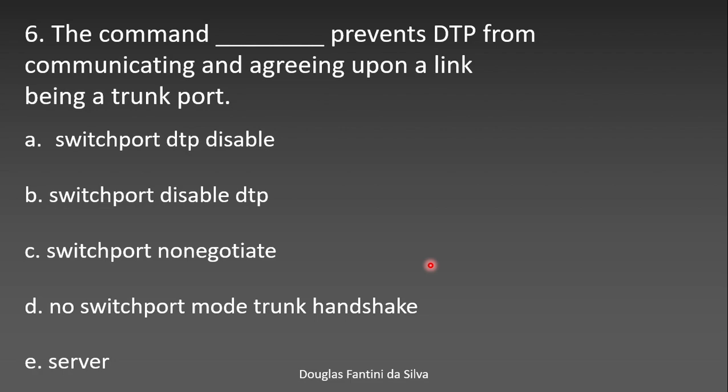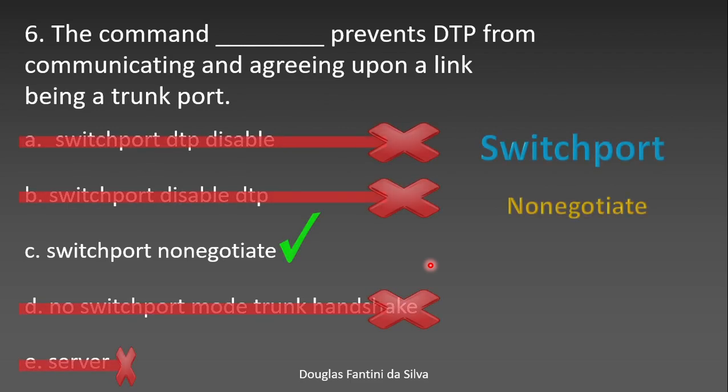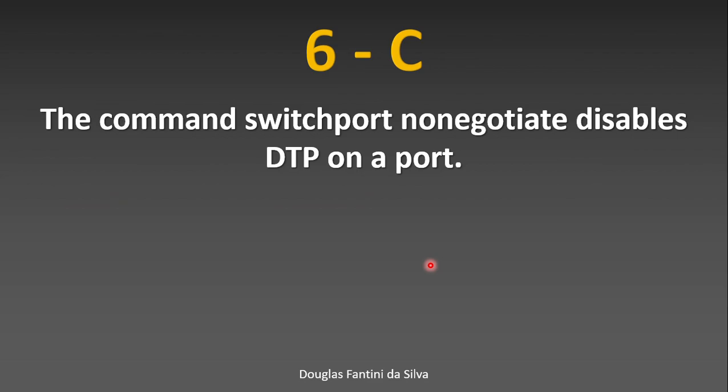Number six: which command prevents DTP from communicating and agreeing upon a link being a trunk port? The command is 'switchport nonegotiate'. This will prevent a link from becoming a trunk dynamically — DTP is disabled on the port. If you want to form a trunk in this case, you must do it manually by configuring switchport mode trunk.